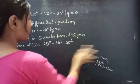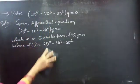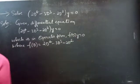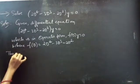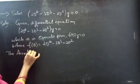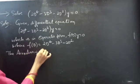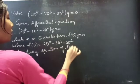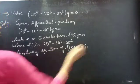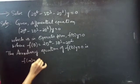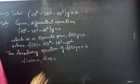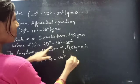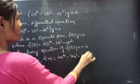Now we need to find the general solution to the given equation. We will find the general solution using the auxiliary equation of f(D)·y = 0. The auxiliary equation of f(D)·y = 0 is f(m) = 0.